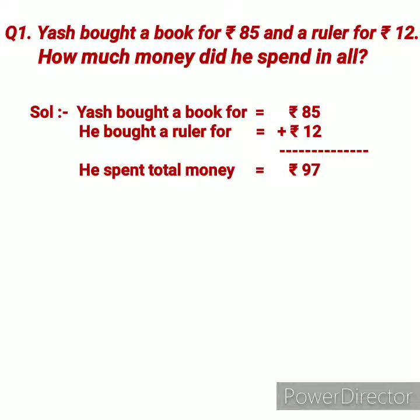Good morning students. Today we will discuss a word problem on addition of money. Our question is: Jas bought a book for rupees 85 and a ruler for rupees 12. How much money did he spend in all?